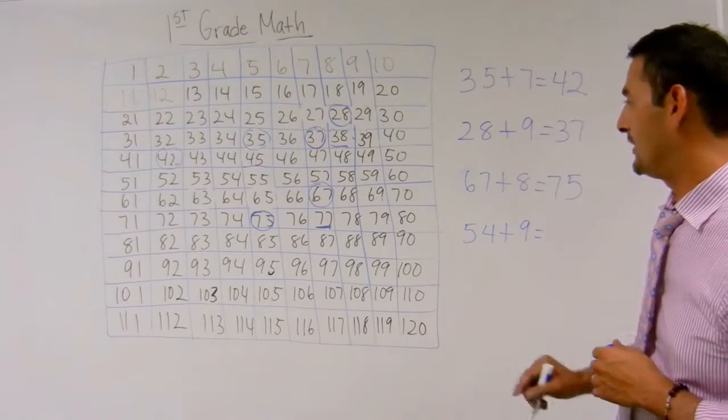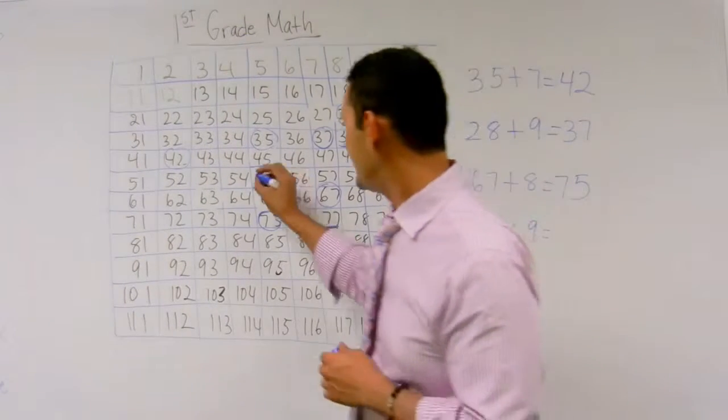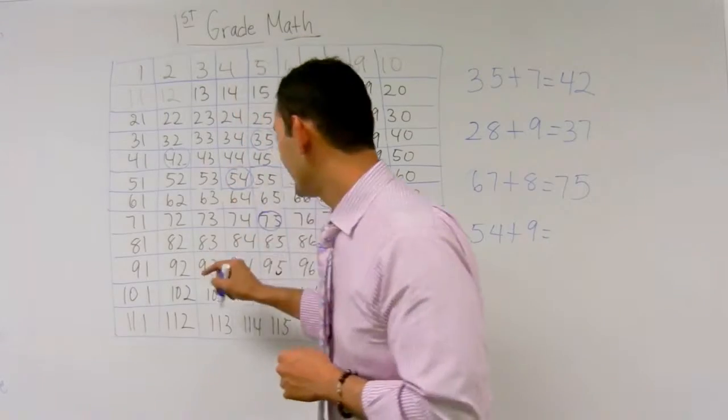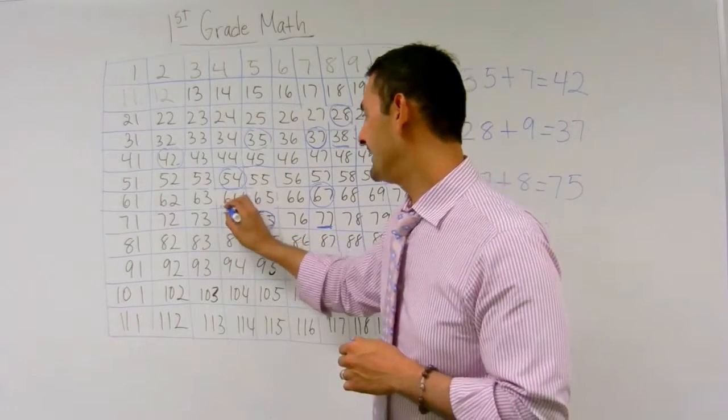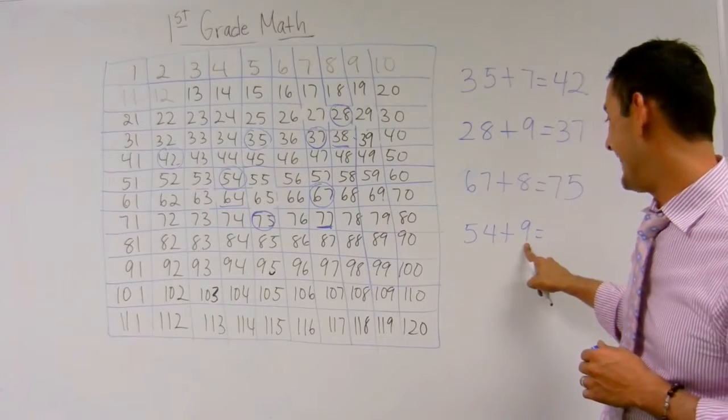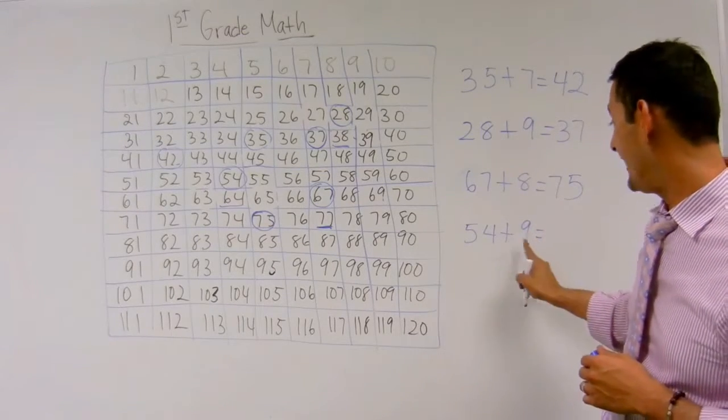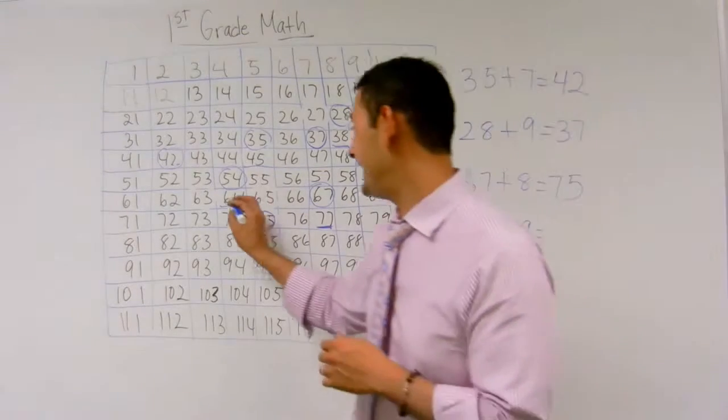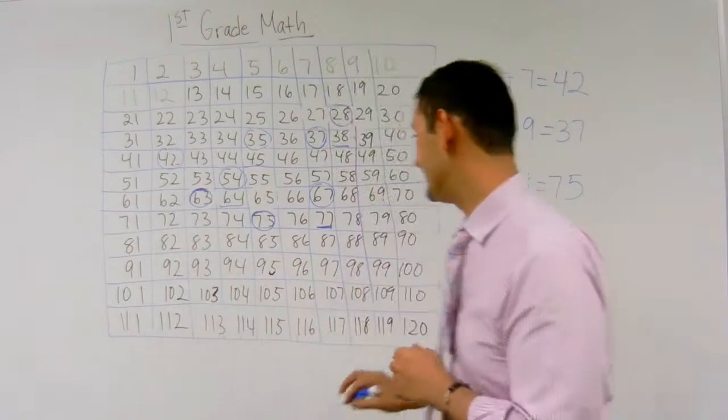Now let's take a look at the last one, 54 plus 9. Here I am with 54. I'm going to move down 10. I'm at 64. I have to add 9, so I have to take away 1, because 9 is 1 less than 10. So the answer is going to be 63.